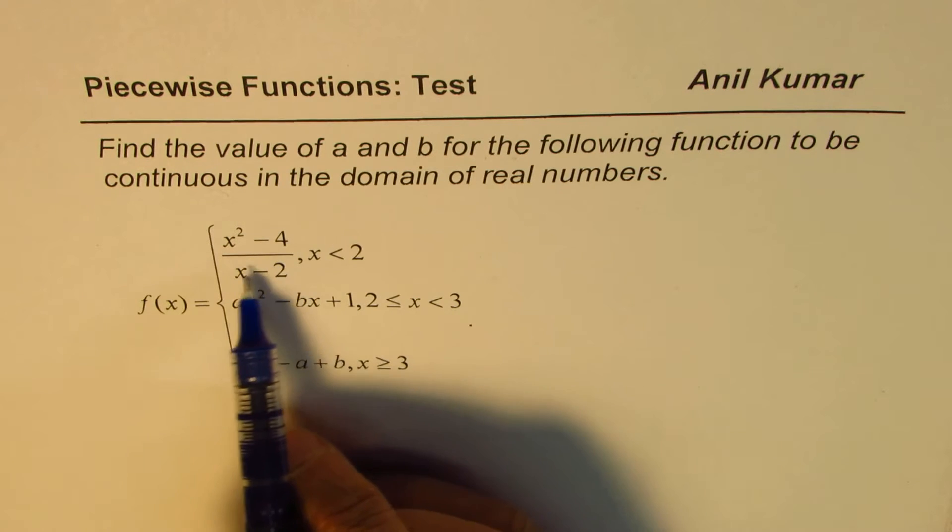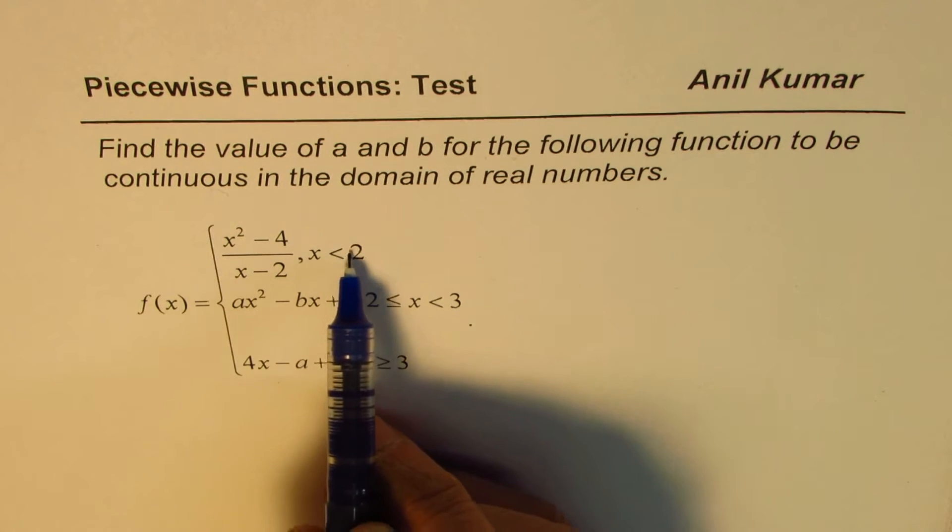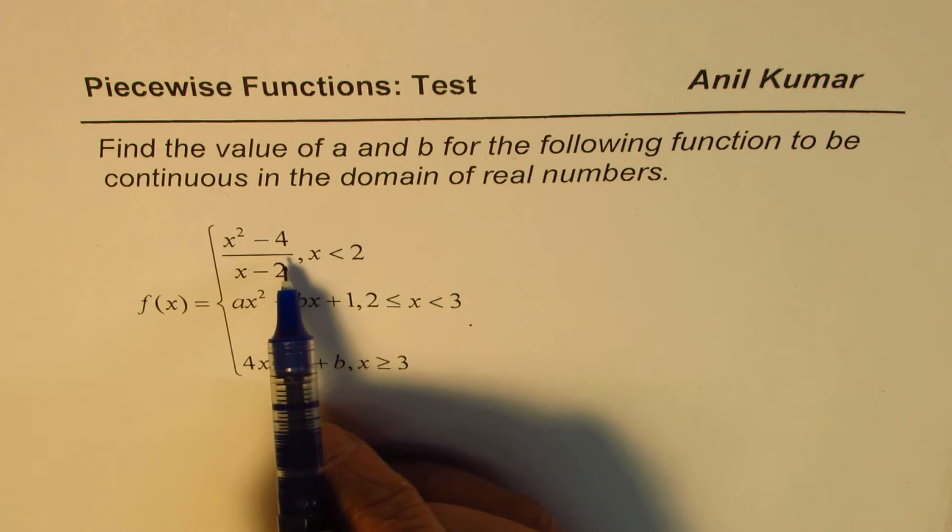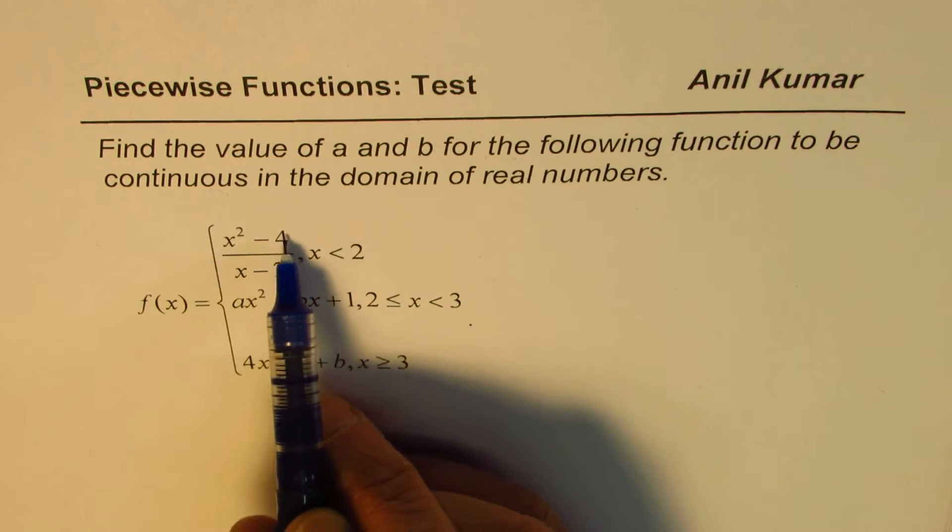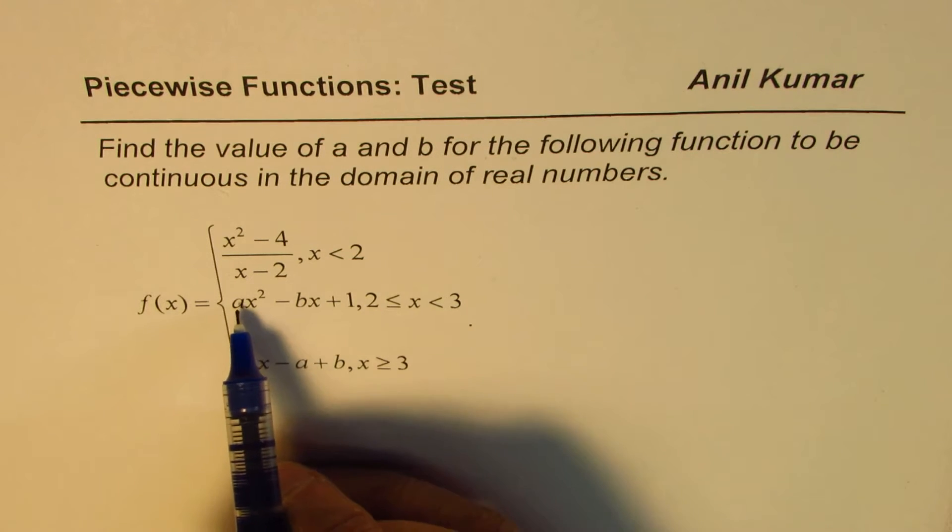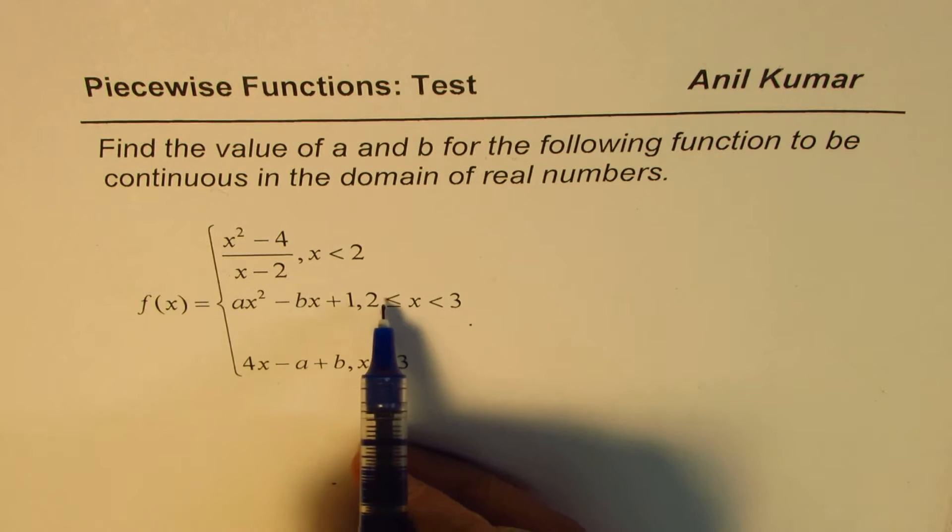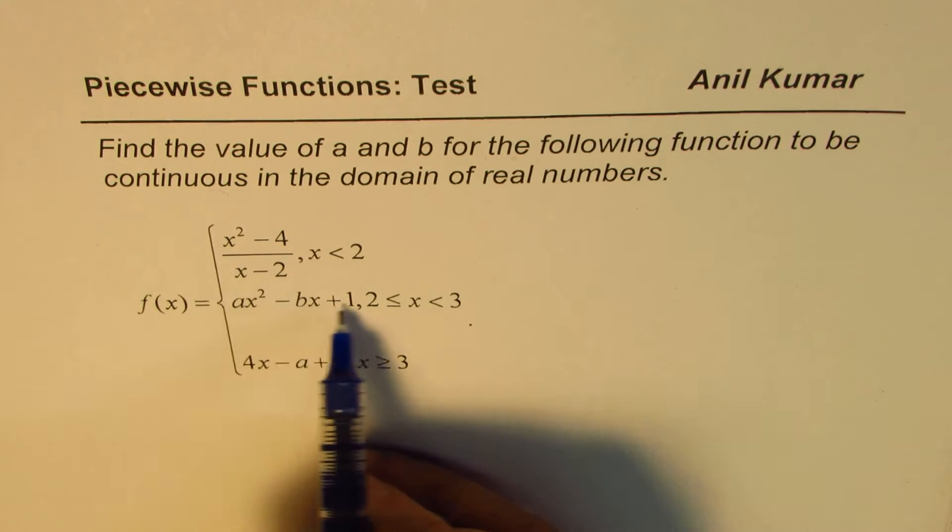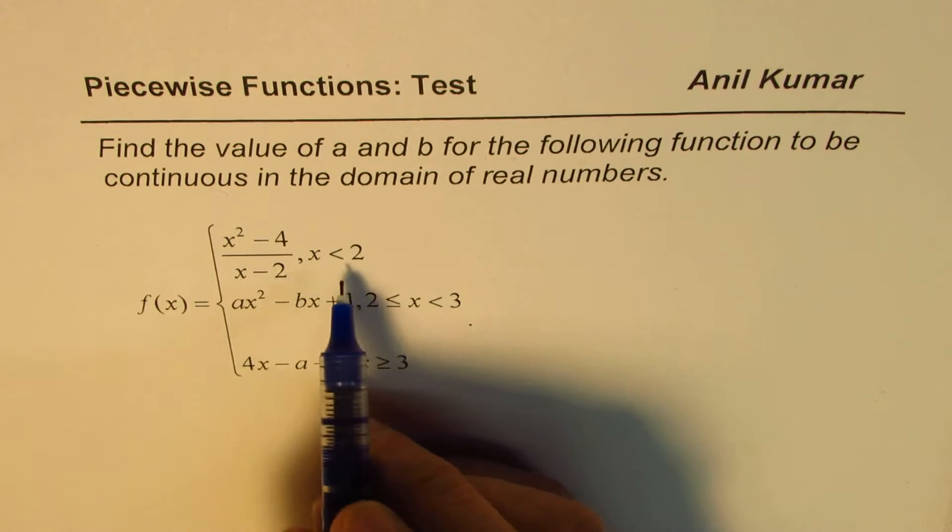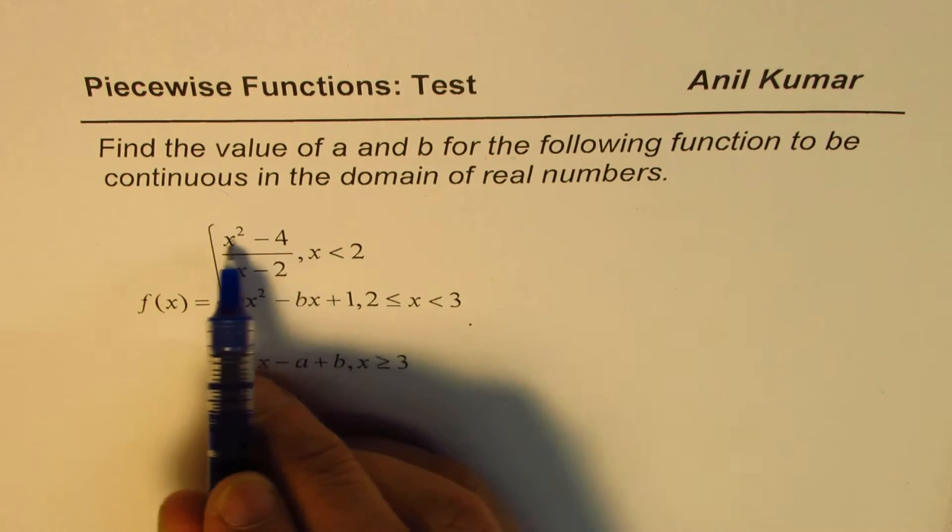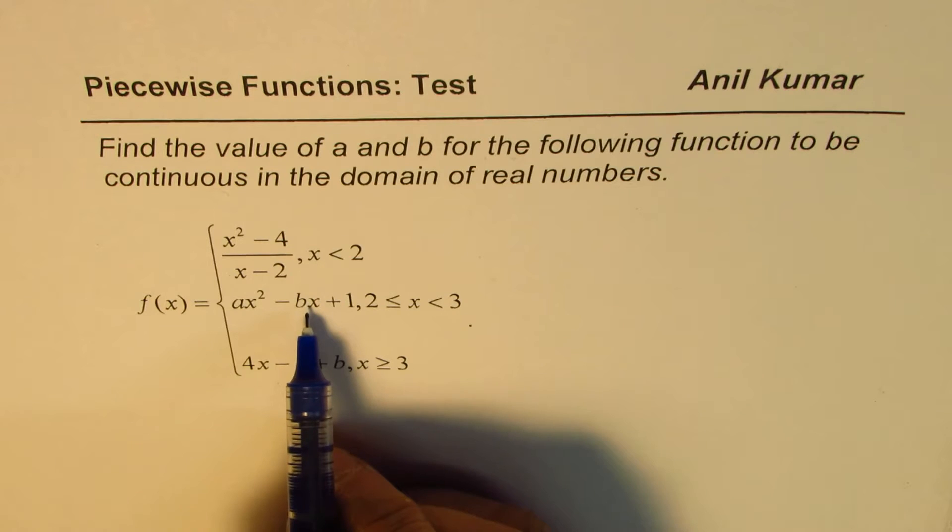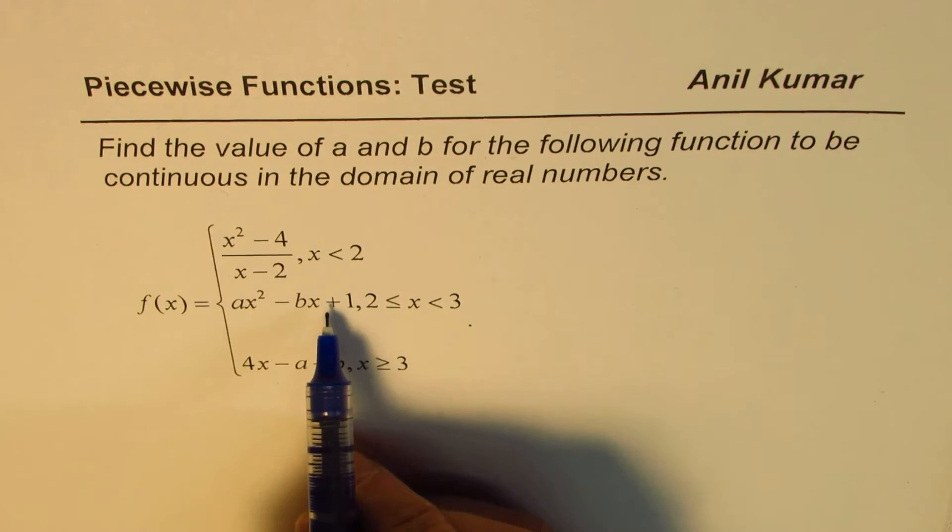It is x square minus 4 divided by x minus 2, when x is less than 2. So what is its right limit? Where will it end at 2? What is the expected value of this function at 2? That should be same as the value of this function at 2. Now remember, x is greater than or equal to 2. So at 2, the value is this function. So for this function to be continuous at 2, we should substitute 2 here, evaluate, and 2 there, evaluate, and these two values should be same.